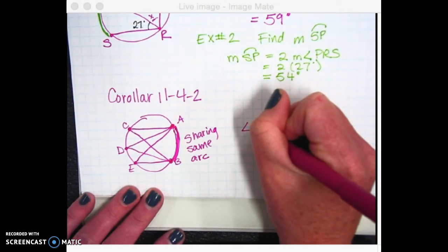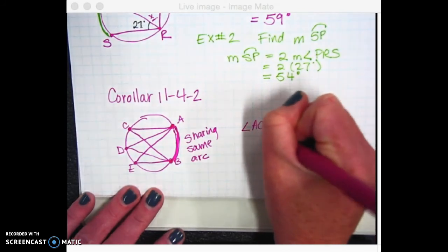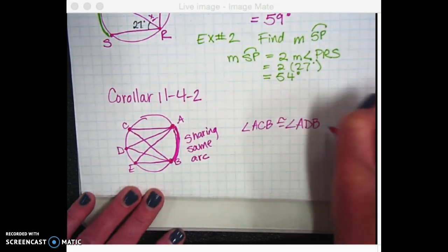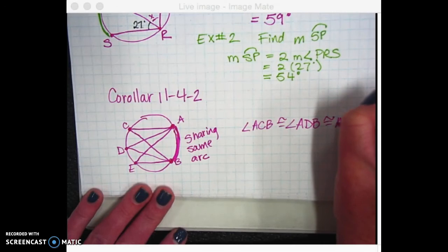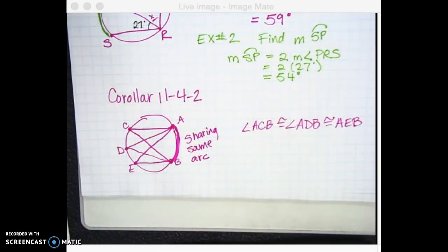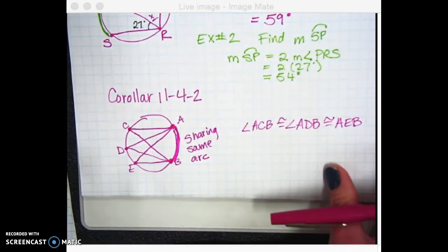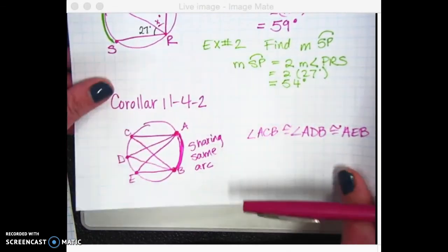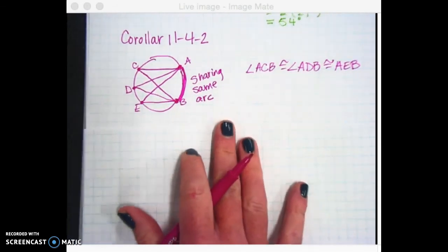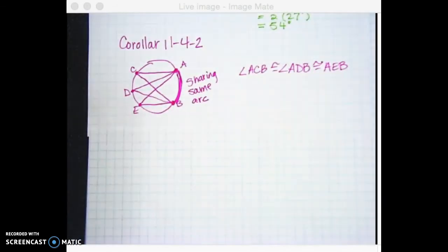So here's what this corollary says. This corollary says that if they're all sharing this same arc, they're all going to have the same measurement. So angle ACB is going to be congruent to angle ADB, which is going to be congruent to angle AEB. They're all the same because they're all sharing that same arc.